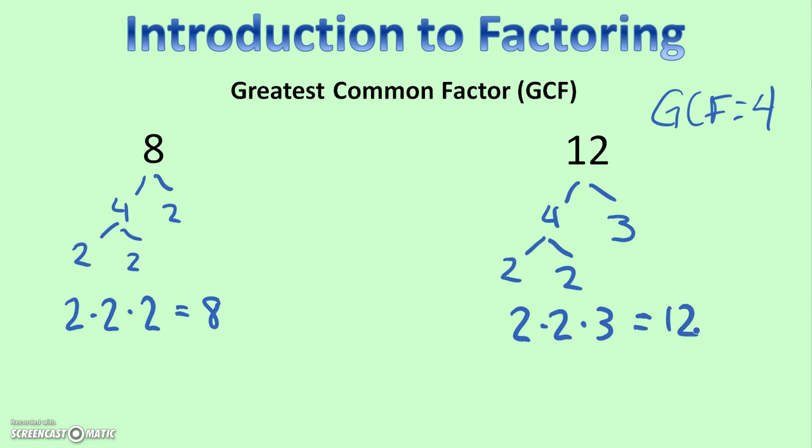Now, to find the greatest common factor, we ask ourselves, what prime factors do these numbers share? They share a 2. They share another 2. And that's it. This one has a 2 and this one has a 3, so they don't share anything more. 2 times 2 is 4, so 4 would be the GCF of 8 and 12.